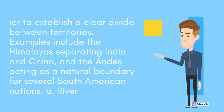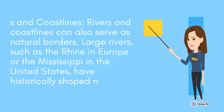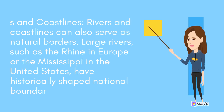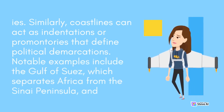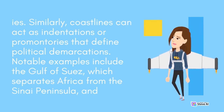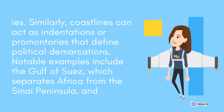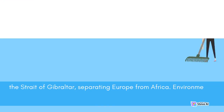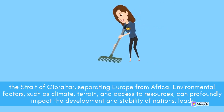Rivers and Coastlines: Rivers and coastlines can also serve as natural borders. Large rivers, such as the Rhine in Europe or the Mississippi in the United States, have historically shaped national boundaries. Similarly, coastlines can act as indentations or promontories that define political demarcations. Notable examples include the Gulf of Suez, which separates Africa from the Sinai Peninsula, and the Strait of Gibraltar, separating Europe from Africa.